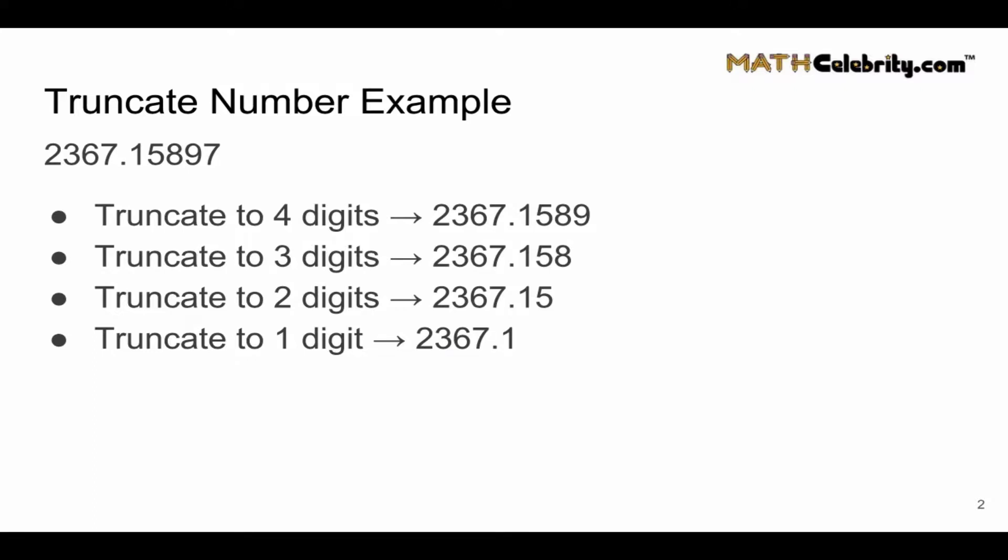Again, imagine you're taking an axe. And if you're truncating to n digits, you aim the axe just right of the nth decimal place and chop everything off to the right. It's that simple. So think of truncate as trunk, pull your axe out and chop the trunk of the tree at a certain point.